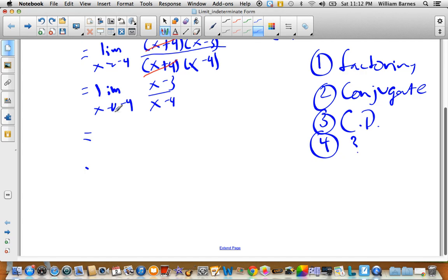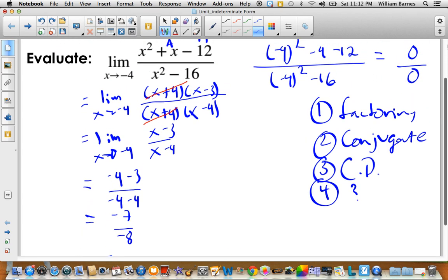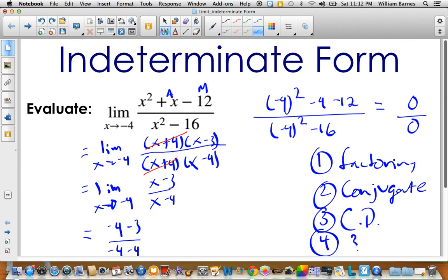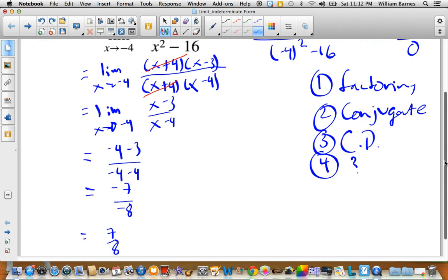So now what I'm going to do is I'm going to evaluate this limit. So I'm just going to sub in negative 4 for x. So I end up with negative 4, subtract 3, all over negative 4, subtract negative 4. So I end up with negative 7 over negative 8, or simply 7 over 8. So the limit of that guy does indeed exist. So at first you couldn't tell. We did a little rig-a-jigging. And then we ended up with 7 over 8.